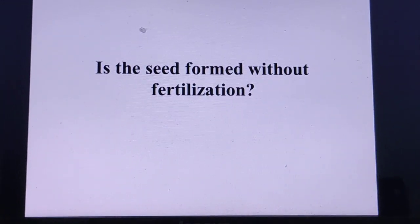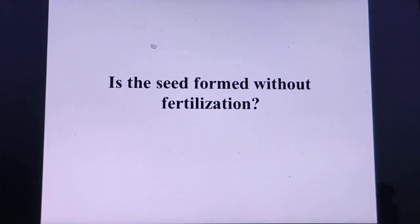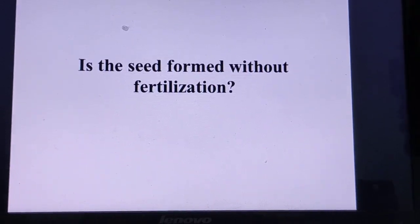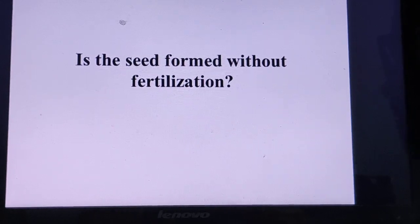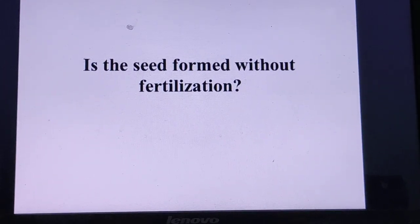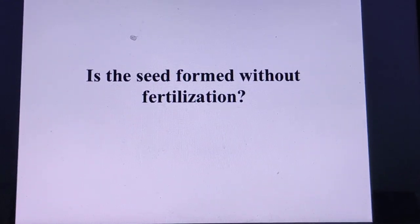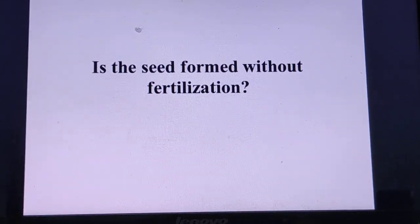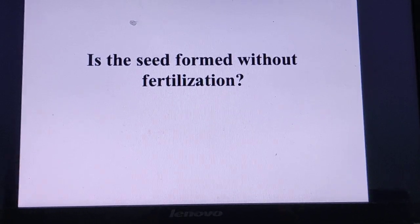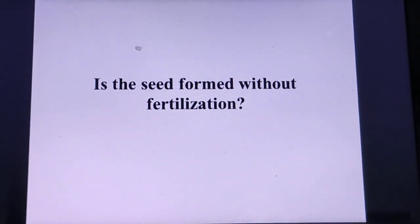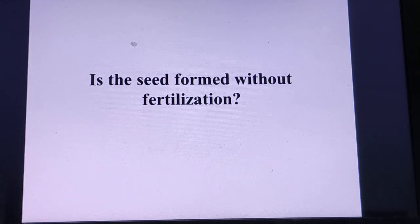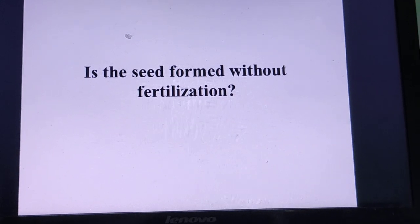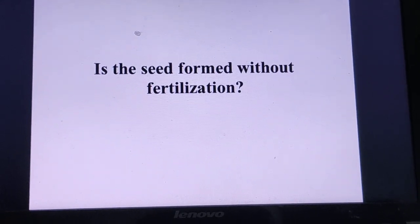In the normal process, when fertilization takes place, the embryo is formed, the ovule changes to seed, and simultaneously the ovary changes to fruit. But parthenocarpy is a process where without fertilization the ovary changes to fruit, meaning there is no seed formation. Parthenocarpic fruits are seedless. If fruit can be produced without fertilization and contains no seed, can a seed be formed without fertilization?